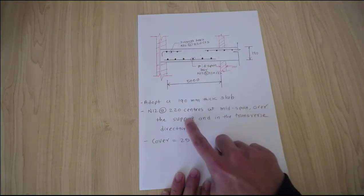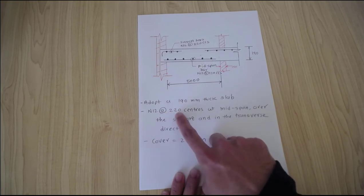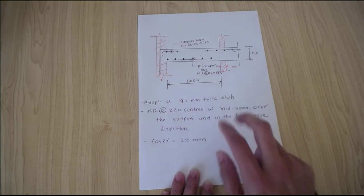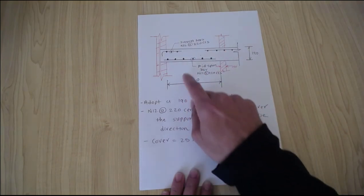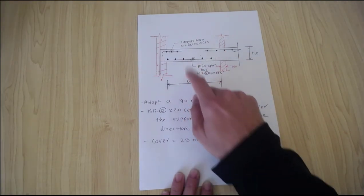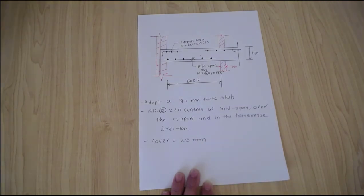We are providing N12 at 200 center to center distance in the transverse direction. The cover to this reinforcement is 25 millimeters, as given in the question.